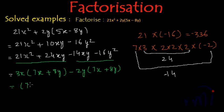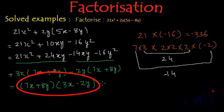And now this 7x + 8y can be taken common and we will be left with 3x - 2y in another bracket. So these two are the factors of 21x² + 2y multiplied by 5x - 8y.